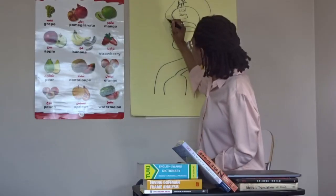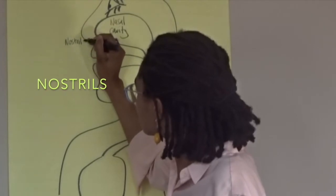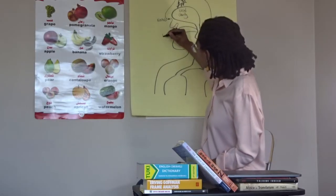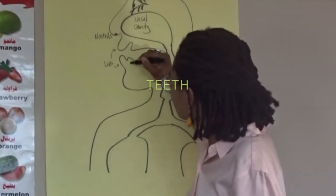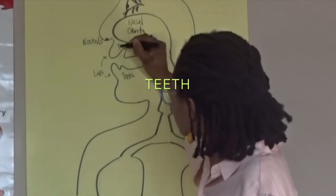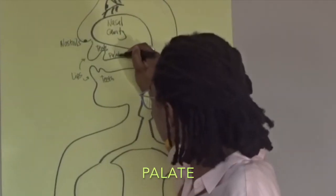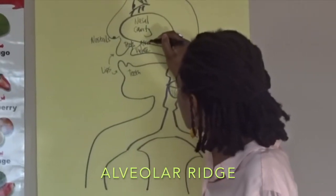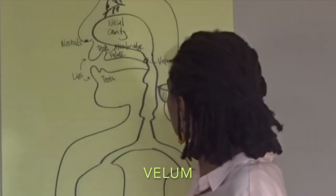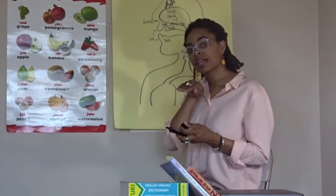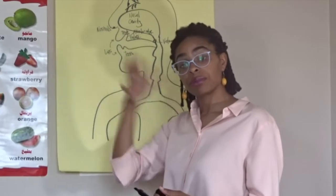Here we have the nostrils, we've got the lips, and we've also got the teeth. We've got the alveolar ridge right here behind the teeth. The velum sort of blocks air from coming up into the nasal cavity, but lowers so that we can produce nasal sounds.